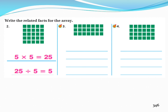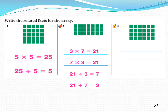Question 3. Look at the array. How many rows does it have? It has 3 rows. And how many columns? 7 columns. What is the total number of tiles? 21. I will use 3, 7, and 21 to write the related facts: 3 multiplied by 7 equals 21, 7 multiplied by 3 equals 21, 21 divided by 3 equals 7, and 21 divided by 7 equals 3.